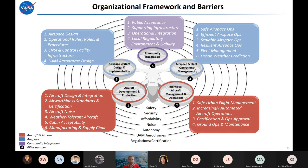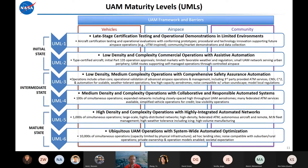Another key piece of background is what we call the UAM Maturity Levels. This was developed by the same UCAT team to help frame how things might evolve over time in terms of operations — describing where we are relative to a far future state where we've got ubiquitous operations and you're able to jump in an aircraft and use it like your car, although it'll be flying itself when you get to the most mature operations.